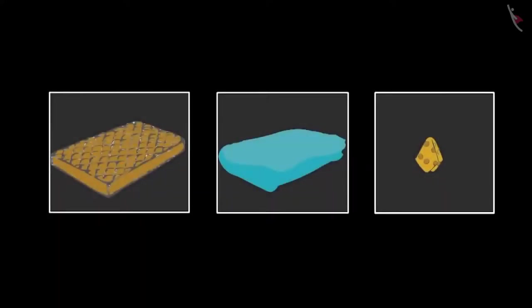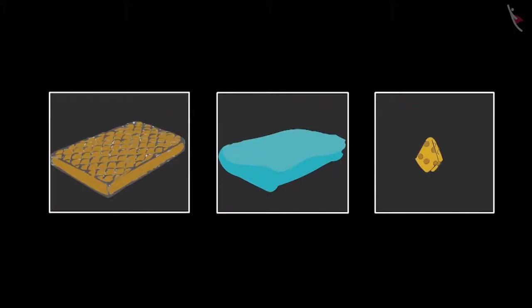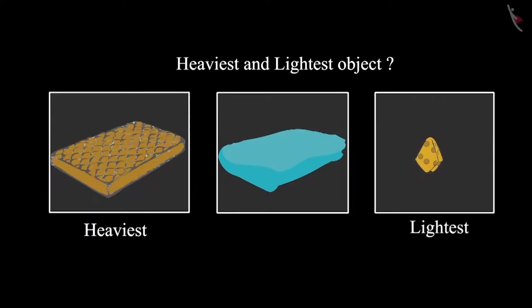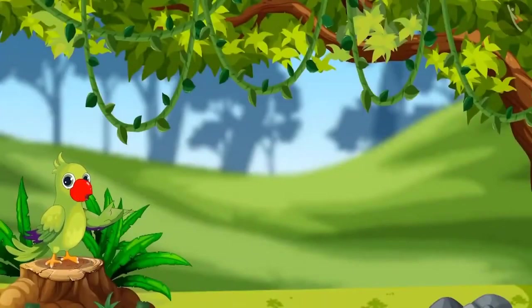Some objects are kept here: a handkerchief, a bedsheet, and a mattress. Children, can you tell me which of these three objects is the heaviest and which is the lightest? Yes, the mattress is the heaviest and the handkerchief is the lightest. It seems you have learned to recognize the lightest and heaviest objects.